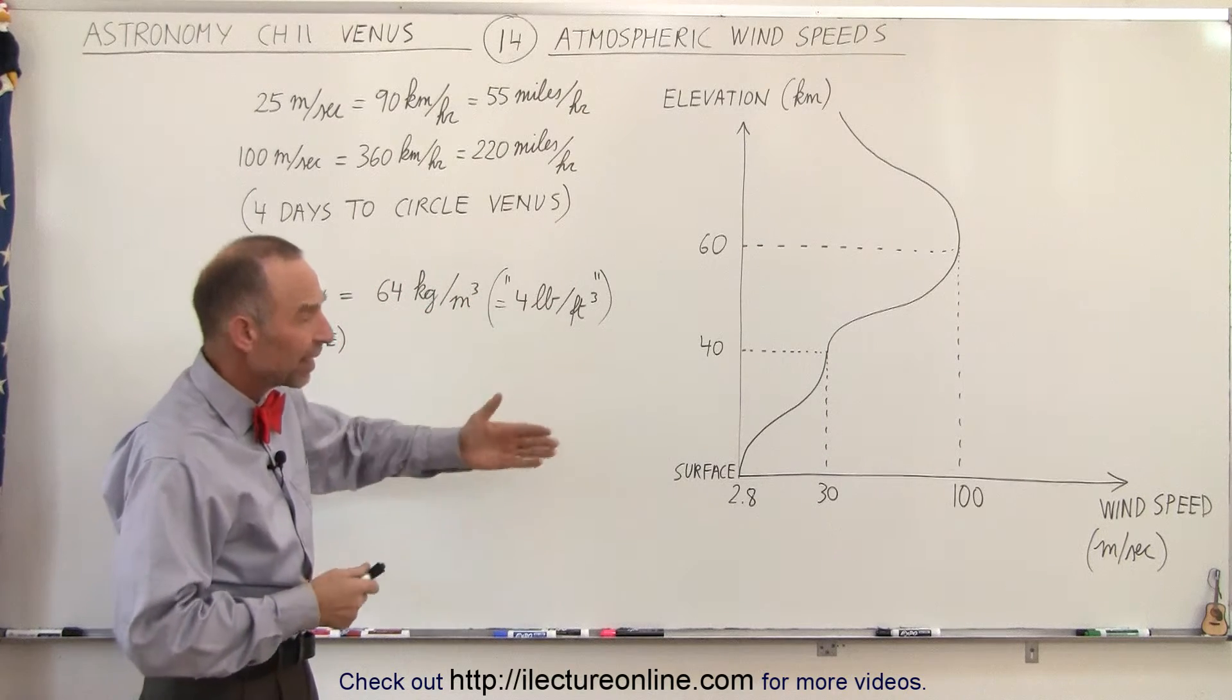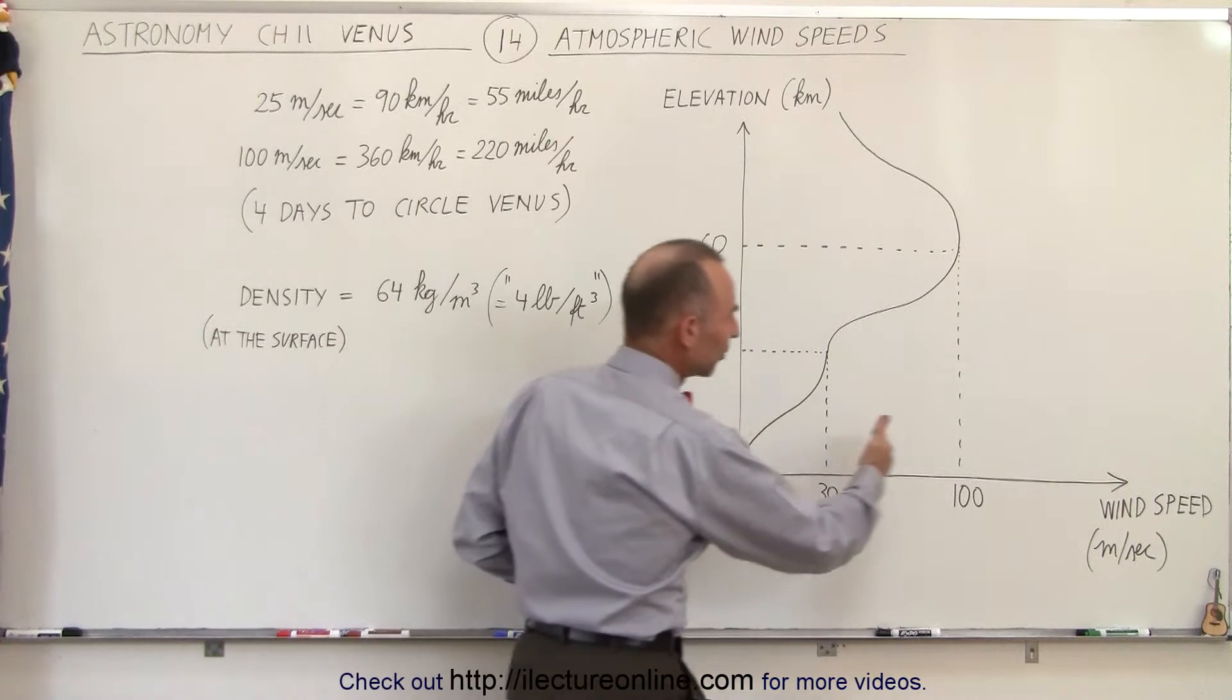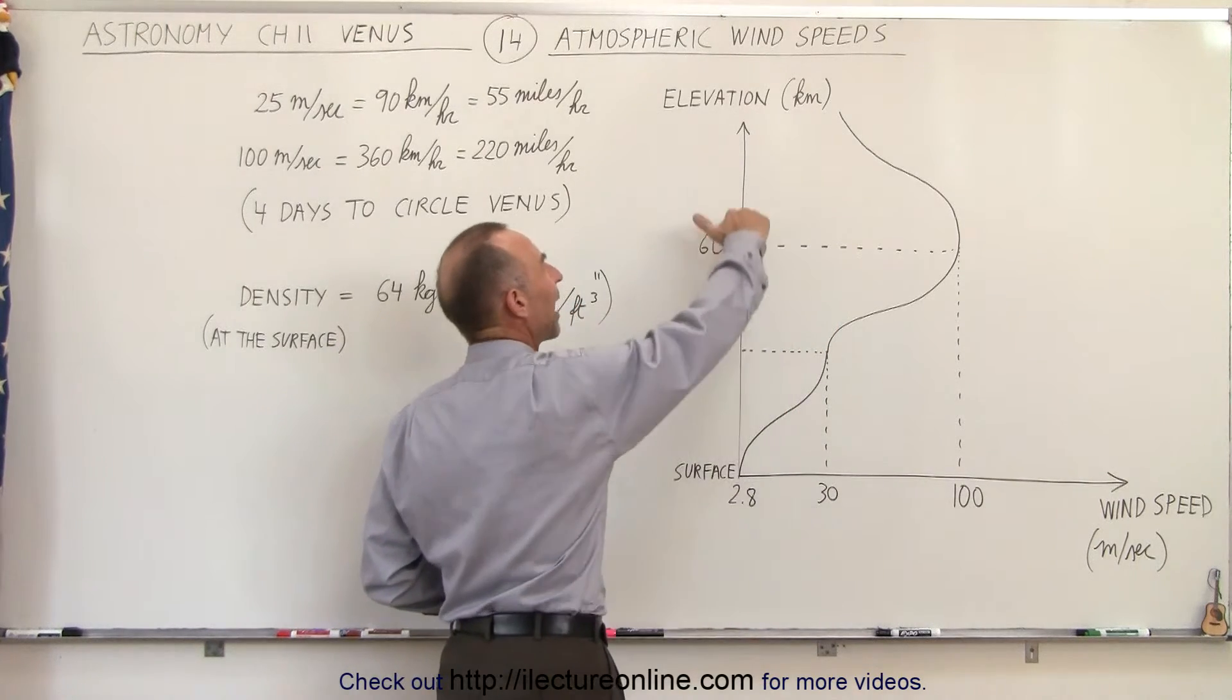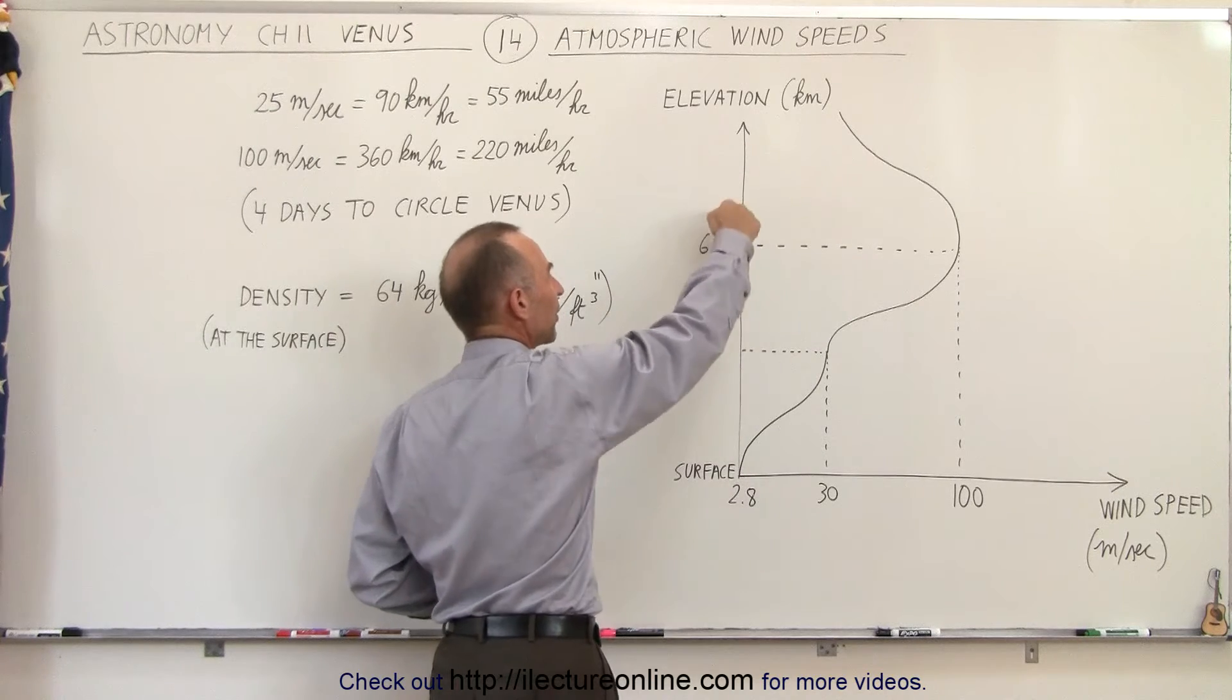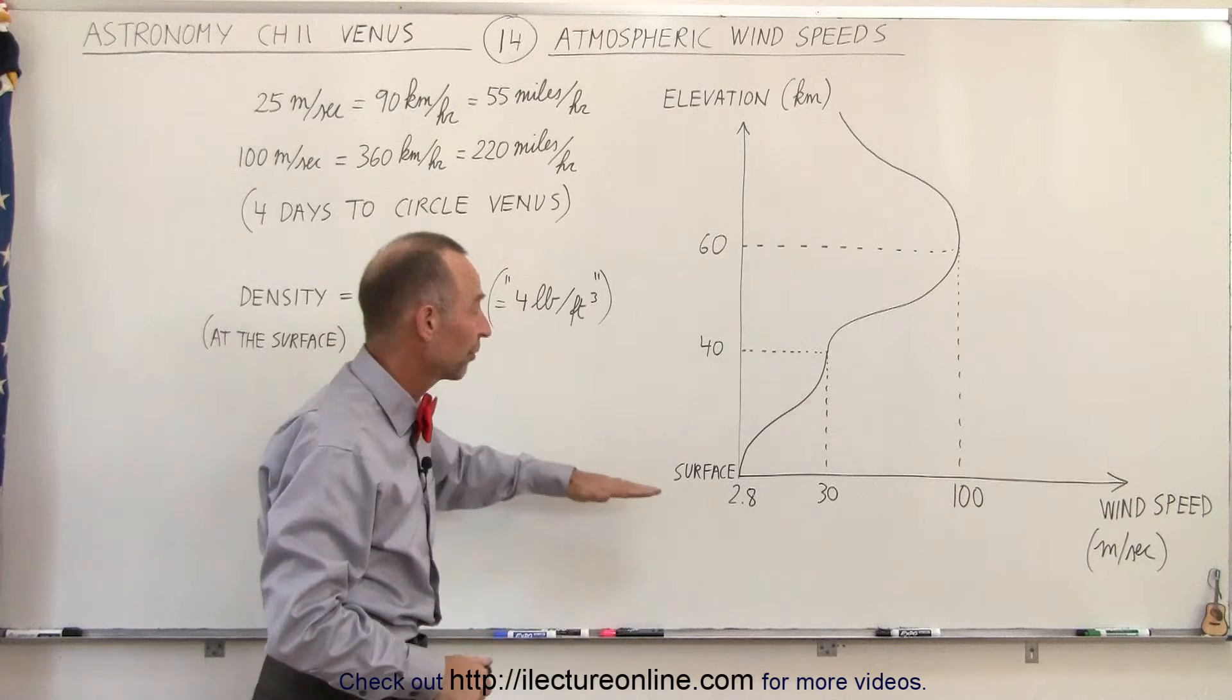So what we have here is what we call a wind speed curve. To the right means it's moving faster, to the left means it's moving slower. When you go up, that's height or elevation into the atmosphere, and the numbers here are in kilometers above the surface of Venus.